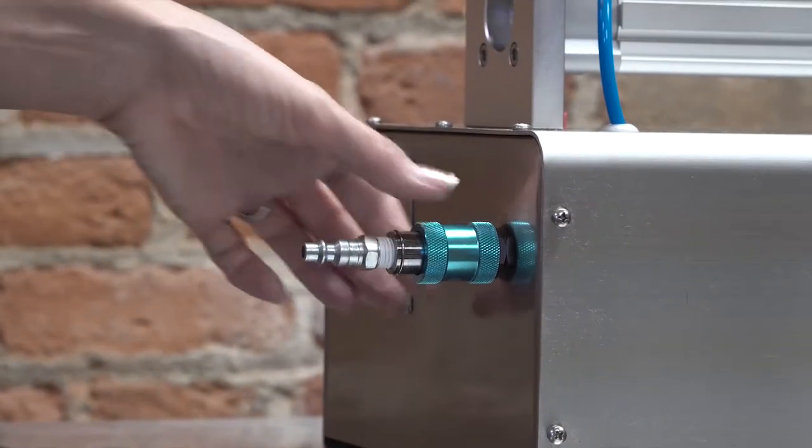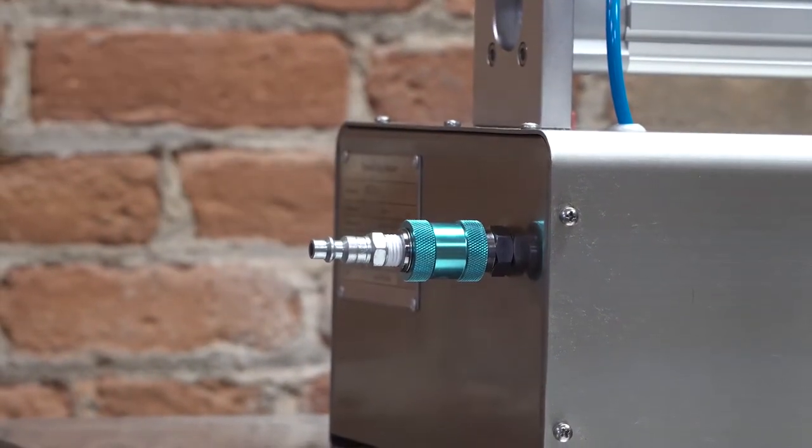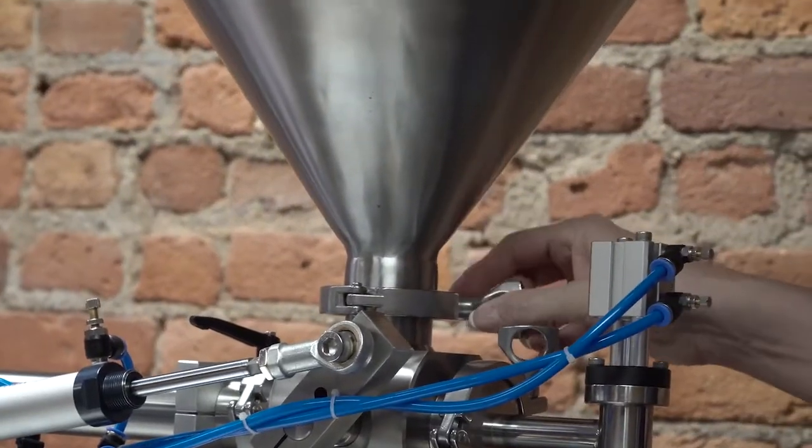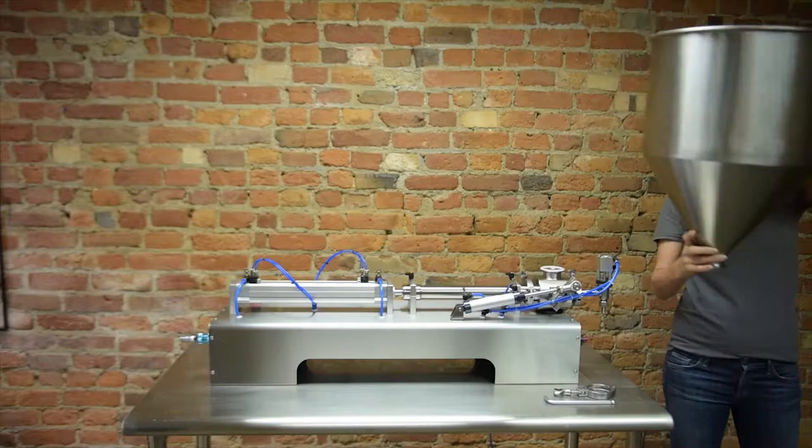Step 1, be sure to close the pneumatic slide valve, push in the emergency stop. Remove the hopper by loosening the sanitary clamp and set the hopper aside.